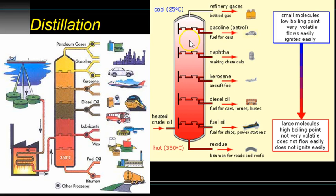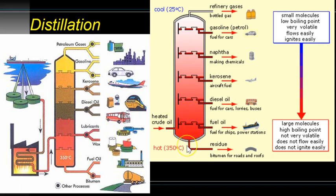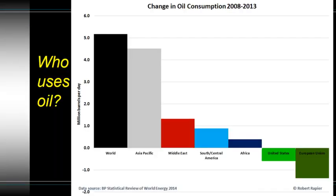Going through the distillation column: at the top you have gasoline, then kerosene, naphtha for making chemicals, jet fuels, and diesel — which is much heavier than gasoline. Further down are fuel oils used by ships or petroleum-powered electrical plants, then lubricants and waxes, and finally the heaviest fraction — bitumen — used for asphalt production. Distillation is how we get all the distillates.